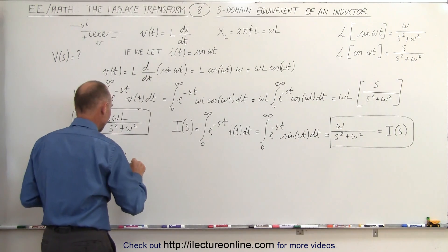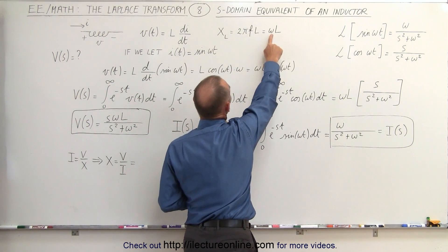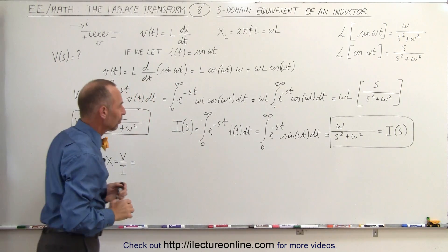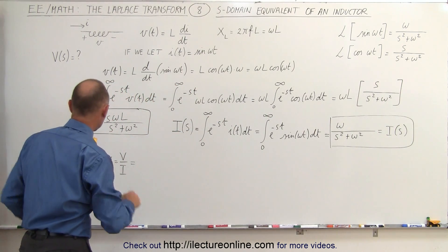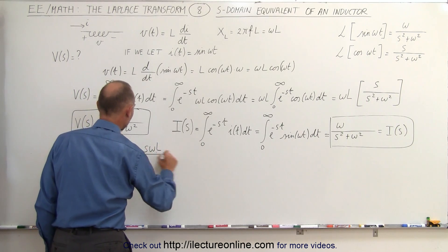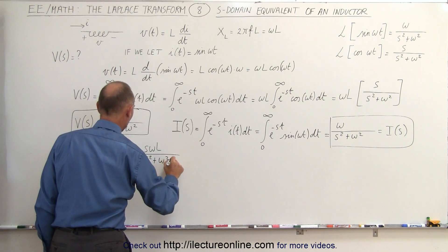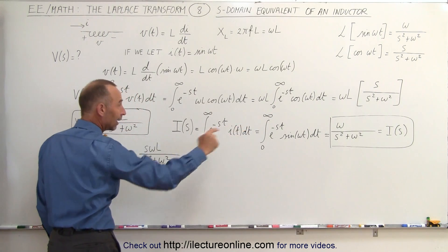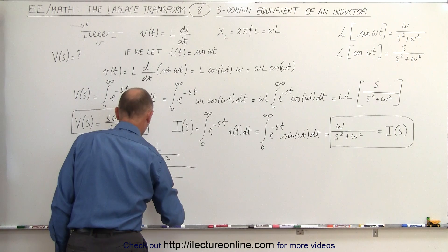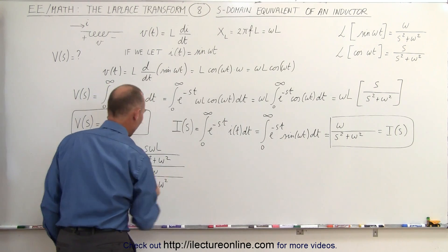Remember that in the time domain, X_L can be written as ω times L. What will it be in the frequency domain? Let's find out. We have SωL divided by S² plus ω², and we divide that by I, which is ω divided by S² plus ω². Notice that in both the numerator and denominator we have S² plus ω² in the denominator of each fraction, so that cancels out.